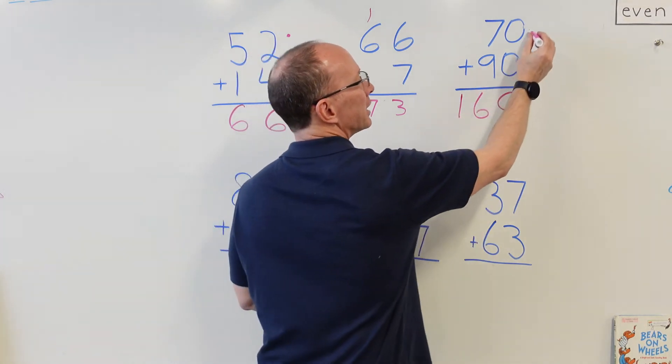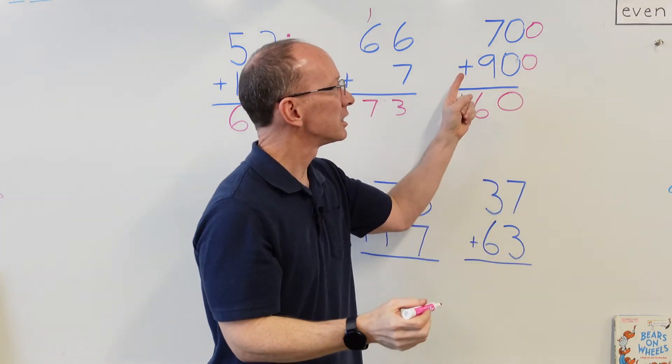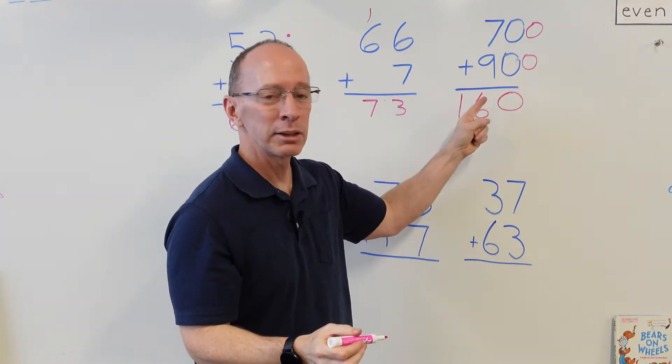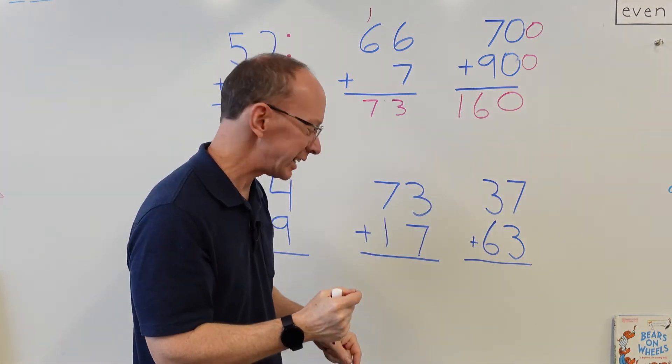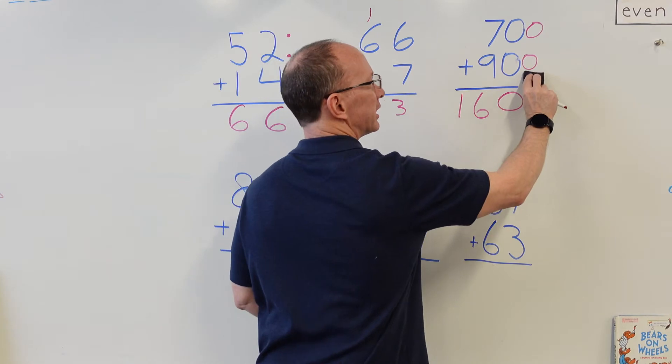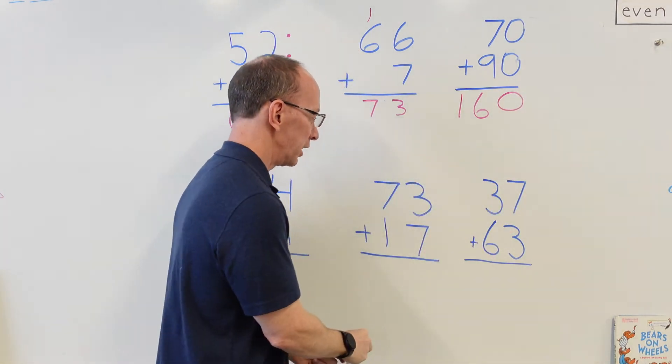This is kind of an interesting problem to do because even if we had another zero here and another zero here, 700+900, you know that nine plus seven is 16 and you just add the zeros. So it's kind of a quick math tactic. I'm going to go ahead and erase these zeros up here so we don't get too confused. 160.